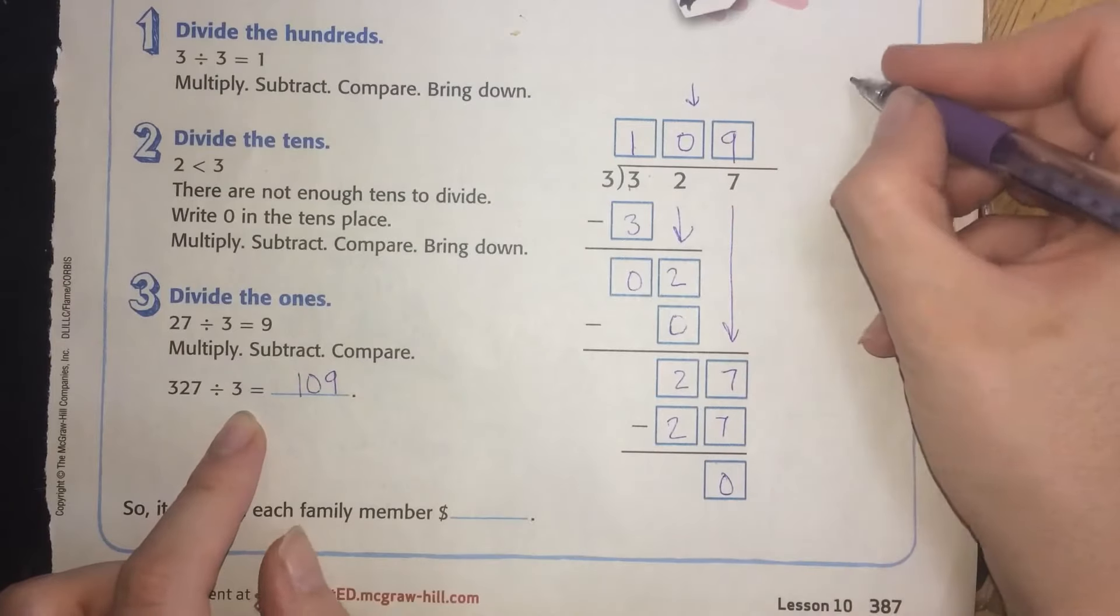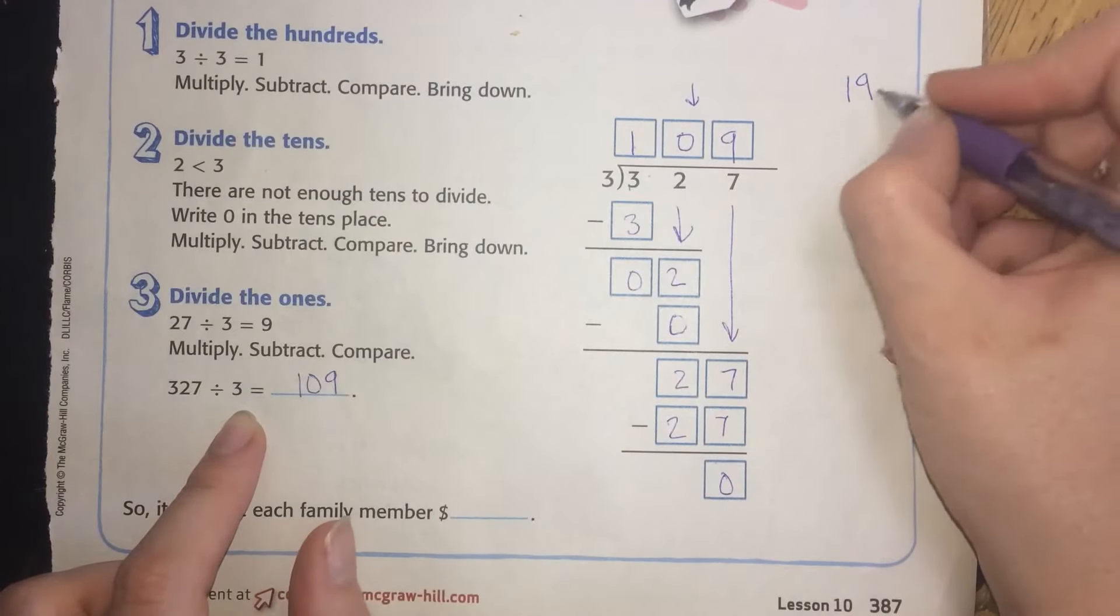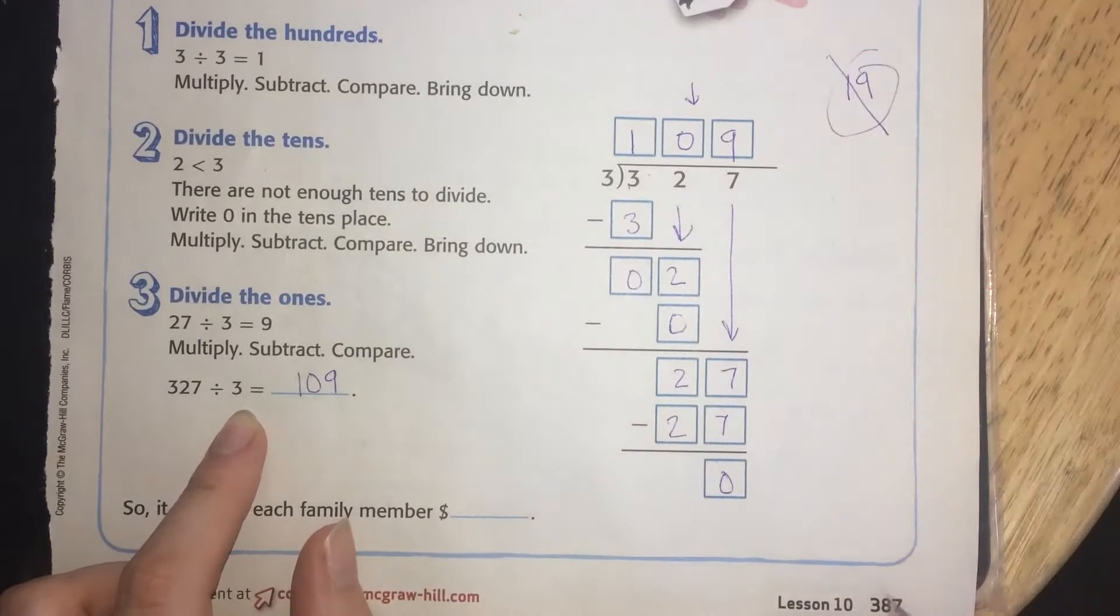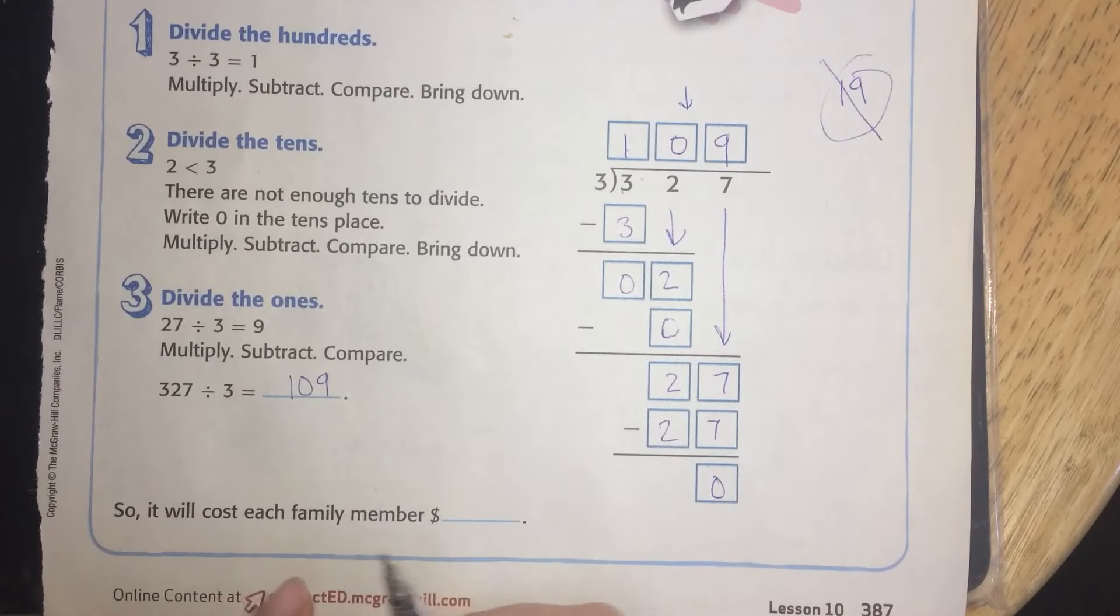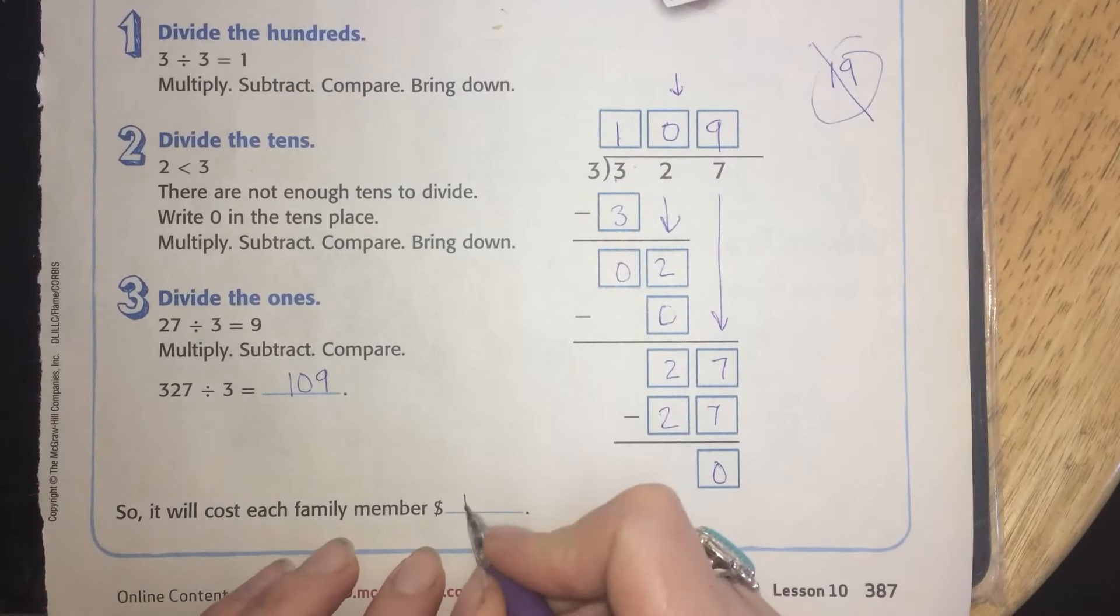If you didn't put the 0 there, you would have been tempted to write 19, but that would not have been correct. So it will cost each family member $109.